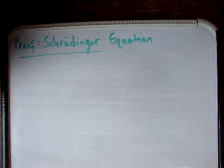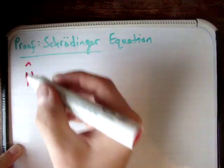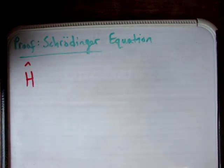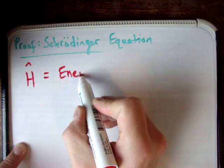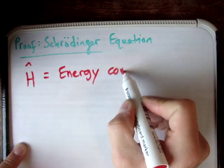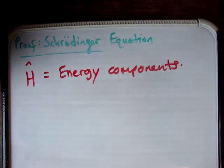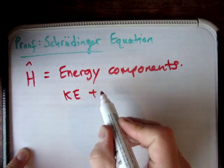Now I'd like to talk about something called the Hamiltonian. A Hamiltonian is something which describes all the energies in a system. A system can have many different types of energy. The two most common and most important components are kinetic energy and potential energy, and there can always be smaller terms. This is called the Hamiltonian, named after the Irish mathematician Hamilton.